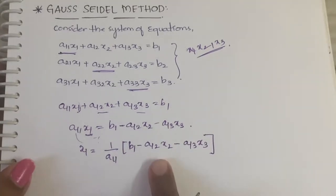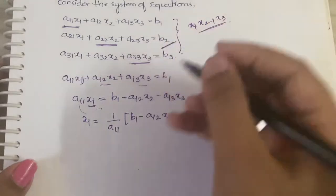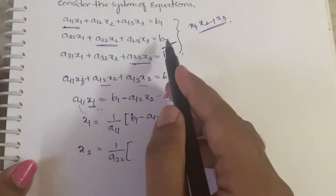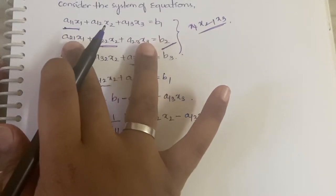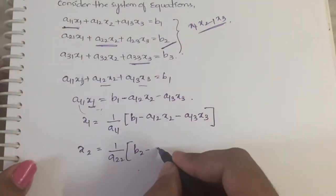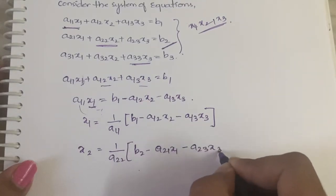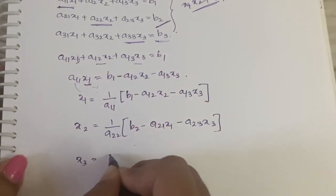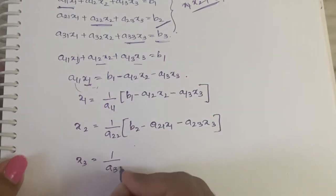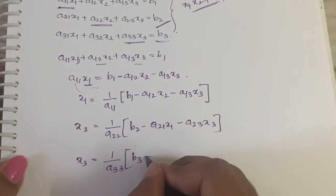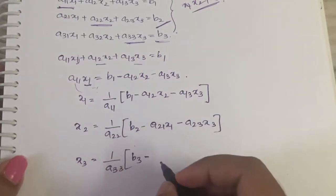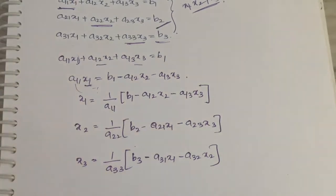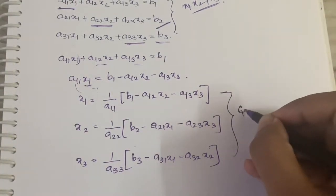This is the equation for x1. In the same way, from the second equation, x2 = (1/a22)(b2 − a21·x1 − a23·x3). In the same way, from the third equation, x3 = (1/a33)(b3 − a31·x1 − a32·x2). So this is the general form for finding x1, x2, and x3.